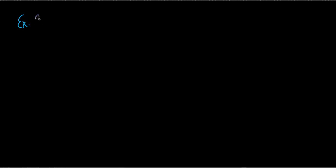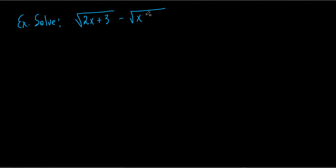Let's do example 3. I'll warn you this one is a little bit long, but there's nothing in here you haven't seen before. Everything in here you've seen before. The problem has square roots again — no cube roots. It's: square root of 2x plus 3 minus square root of x plus 2 equals 2. We want to find the value of x that makes this work.